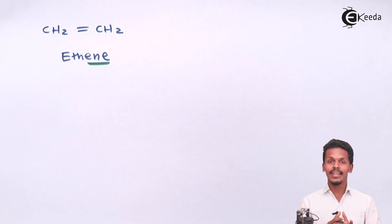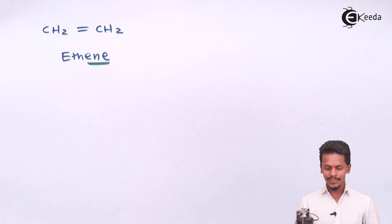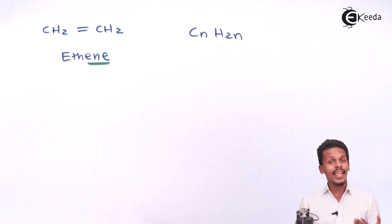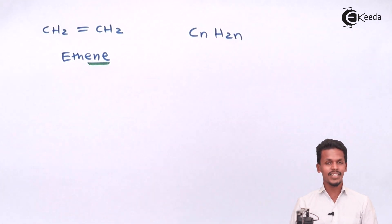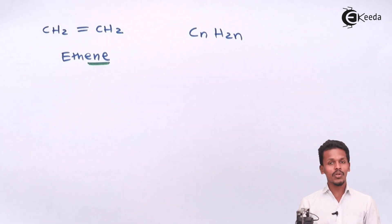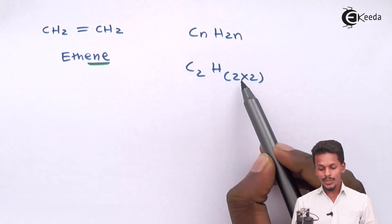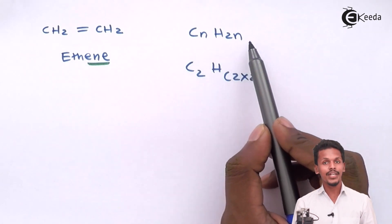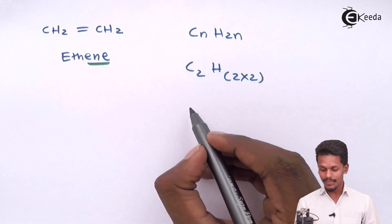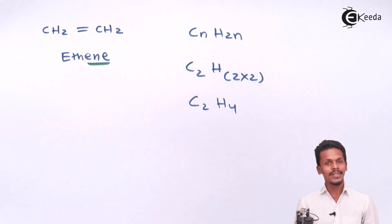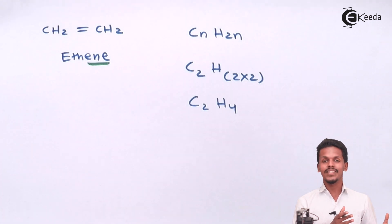That's the reason it is an alkene and it is an unsaturated hydrocarbon. The general formula is CnH2n, where n represents the number of carbon atoms present in that hydrocarbon. In ethene, the total number of carbons is 2, so C2H(2×2) gives us C2H4. That is nothing but ethene, and so it follows the formula CnH2n.